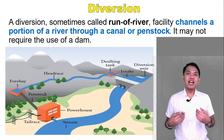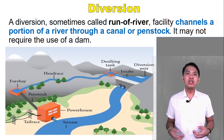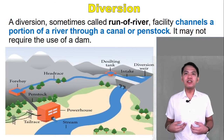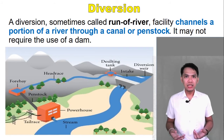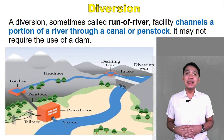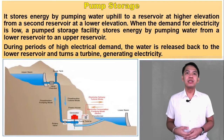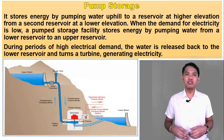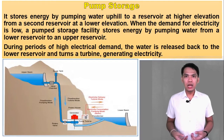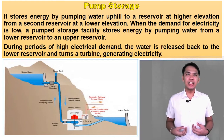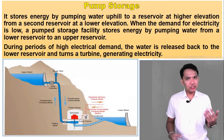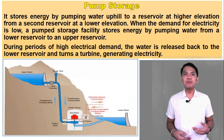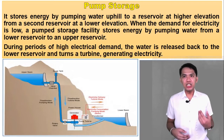The next type of hydropower facility is the diversion, also called run-of-river. This facility channels a portion of a river through a canal or penstock. It may not require the use of a dam. Last is the pump storage. It stores energy by pumping water uphill to a reservoir at a higher elevation from a second reservoir at a lower elevation. When the electricity demand is low, a pump storage facility stores energy by pumping water from the lower reservoir to the upper reservoir. During the period of high electrical demand, the water is released back to the lower reservoir and turns a turbine, generating electricity.